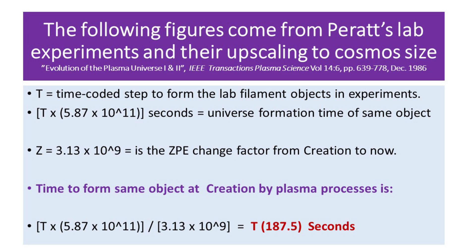T is a time-coded step to form the lab filament objects in experiments. T times 5.87 by 10 to the 11 seconds is the universe formation time of the same type of object as Peratt's upscaling today. Z equals 3.13 by 10 to the 9 is the ZPE change factor from creation to now. When we put this all together, the time to form the same object at creation by plasma processors as in the lab is T times 187.5 seconds.